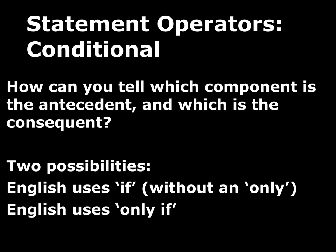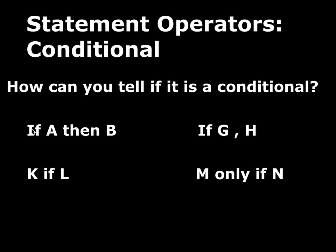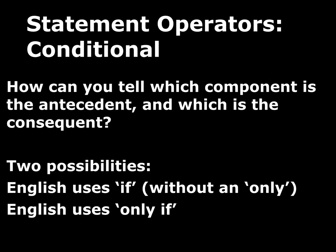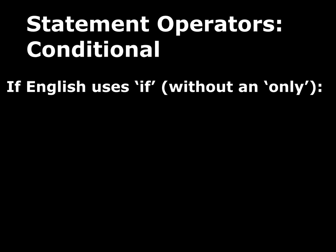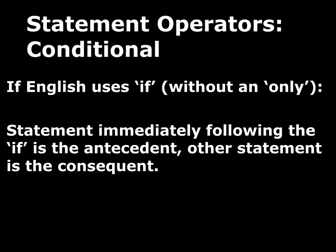There are two possibilities in English — they all use 'if,' but either it's using 'if' by itself without an 'only,' or it is 'only if.' If the English has an 'if' by itself, not part of 'only if,' then the statement that immediately follows that word 'if' is going to be the antecedent, and then the other statement is the consequent.